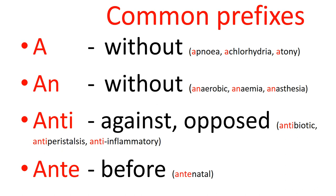Atony: the 'tony' part refers to the tone of a muscle. So atony is a condition where the muscle has lost its tone and strength. For example, in the post-operative situation there could be gastrointestinal atony, and if that's severe it could become a paralytic ileus where the bowel isn't working at all.